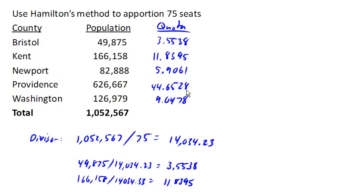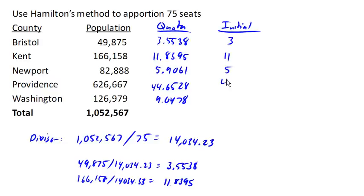Now we can make our initial allocation — our apportionment — by just chopping off the decimal parts. So we get 3, 11, 5, 44, and 9. We add those up and we end up with 72 seats allocated.